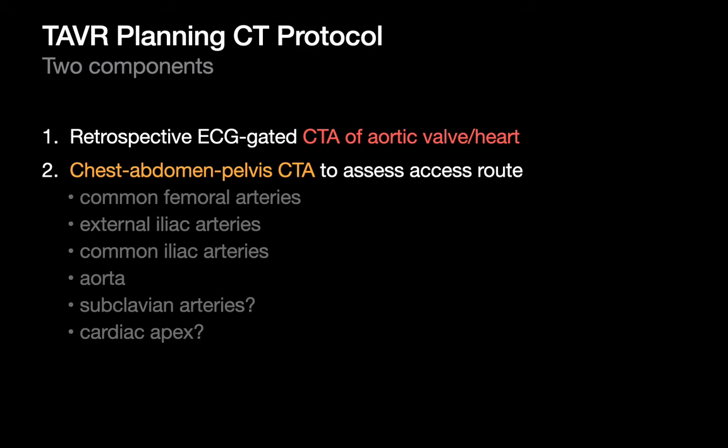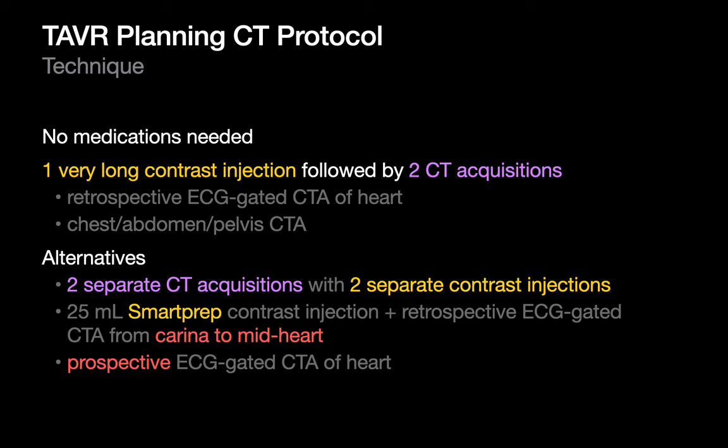A TAVR planning CT imaging study usually includes two imaging components: a retrospective ECG-gated CTA of the heart and aortic valve in particular, and a CTA of the chest, abdomen, and pelvis to allow assessment of the access route for the TAVR procedure and any alternative routes if needed. Unlike coronary CTAs, TAVR planning CT studies usually do not require medication. Colleagues generally prefer doing these studies using a single long contrast injection, usually 150 milliliters of contrast, followed by two CT acquisitions.